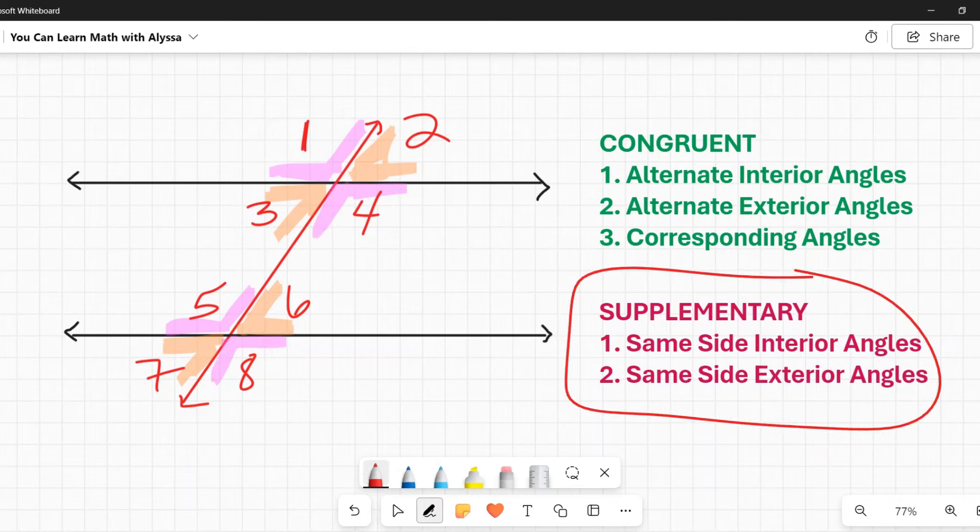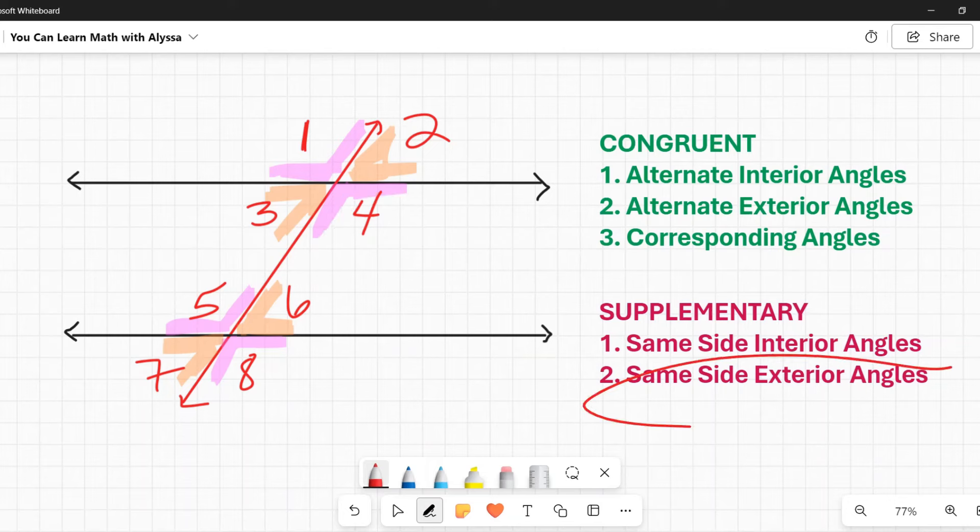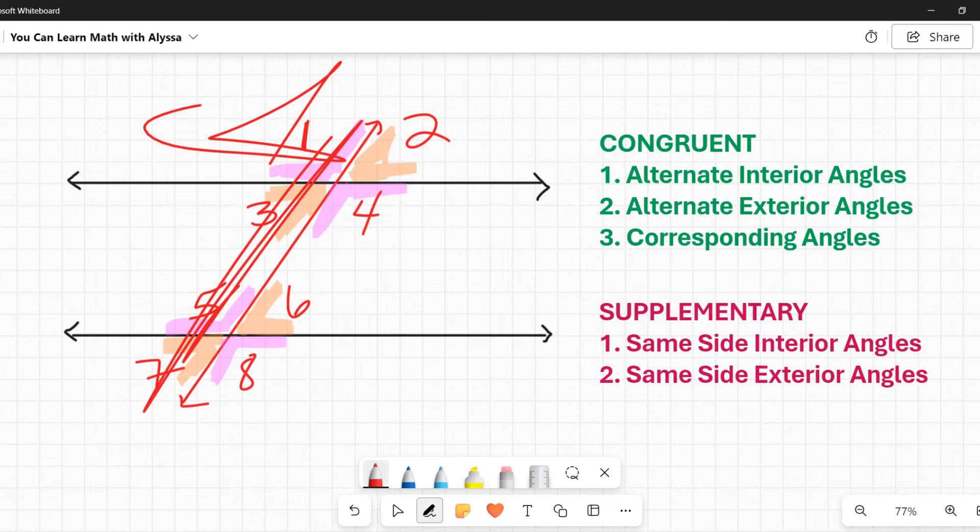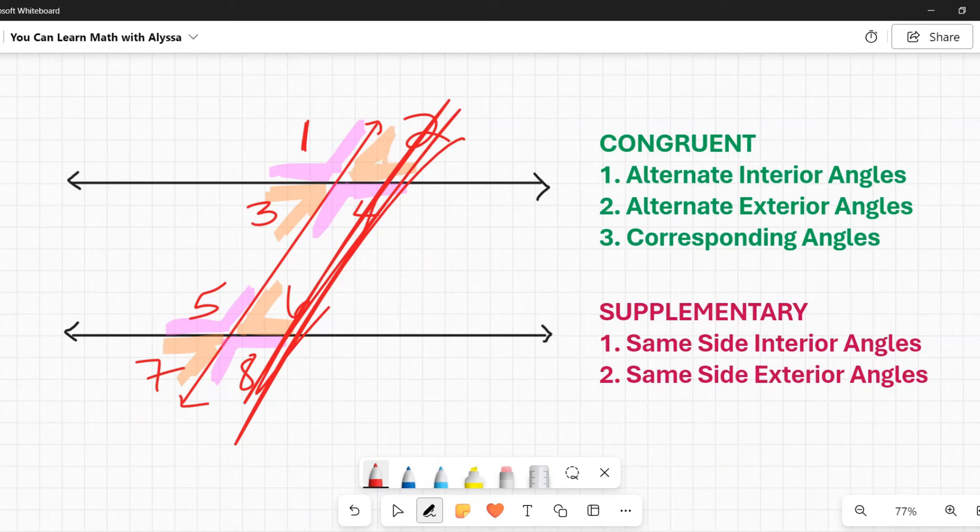Then we have our supplementary ones, the ones that add up to 180. First, the same side interior angles. Again, that first part, same side, refers to the transversal. And interior would refer to the part that's fenced in. So same side interiors would be 3 and 5 or 4 and 6. And finally, same side exterior angles and same side and exterior parts. So that would be like 1 and 7. Or we can have this same side and exterior. So that would be 2 and 8.